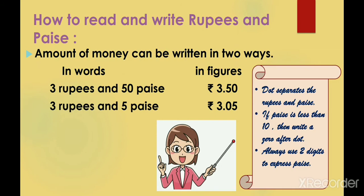Most students make mistakes while writing paise and rupees. For example, if paise is less than 10 — say 9 paise — then in figures it is written as 0.09. Make a note that the zero must be placed after the dot when paise is a single digit.